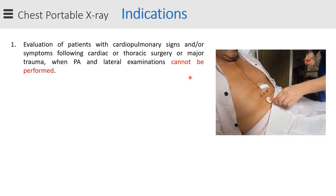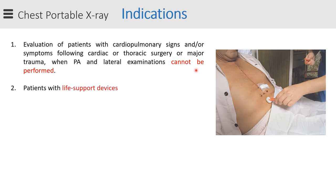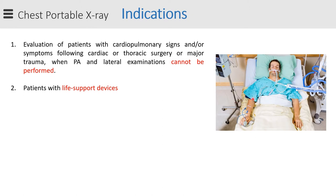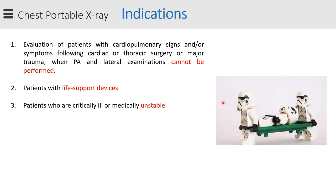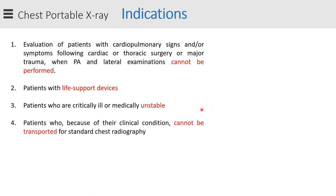The first subgroup of patients are those with cardiopulmonary signs and symptoms following surgery or trauma, when the normal PA and lateral x-ray cannot be performed. Then we have patients with life support devices, mostly patients in critical care units. These patients are usually unstable and need to be monitored continuously, so it's not possible to shift them to the radiology department.